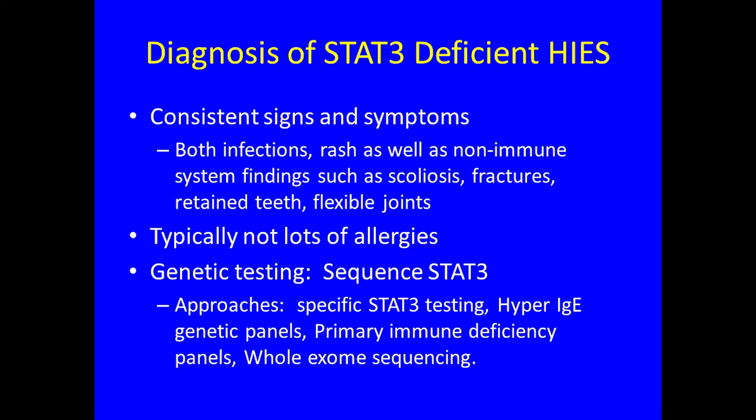The diagnosis is made with genetic testing when there are consistent signs and symptoms — high IgE combined with infections, rash, and non-immune system findings like scoliosis, fractures, retained primary teeth, or flexible joints. Paradoxically, if there are lots of allergies and anaphylaxis, it makes us think there might be a different cause of high IgE. To diagnose this disease you sequence the STAT3 gene. Different approaches include sequencing just that gene, using a hyper-IgE panel, a primary immune deficiency panel, or whole exome sequencing.